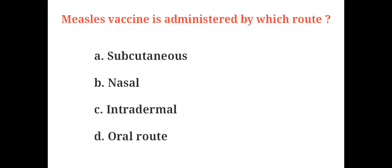Measles vaccine is administered by which route? A. Subcutaneous, B. Nasal, C. Intradermal, D. Oral route. And the correct answer is A. Subcutaneous route.